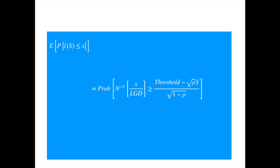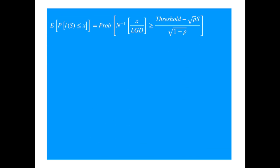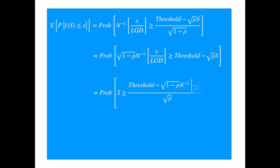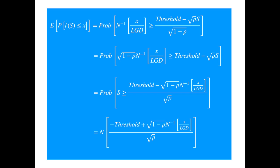Substituting the expression for the conditional probability of default derived earlier and applying inverse normal to both sides of the inequality — which preserves the inequality because the normal distribution function is continuous and monotonic — we simplify further. Moving the denominator term to the left-hand side and rearranging to isolate s on the left-hand side, since s is standard normal we can calculate this probability using the normal distribution. Multiplying by minus 1 reverses the inequality, since the cumulative normal gives the probability of less than or equal to rather than greater than. This is Vasicek's loss distribution, and it is not conditional on s.